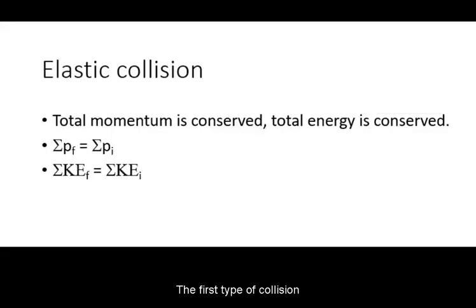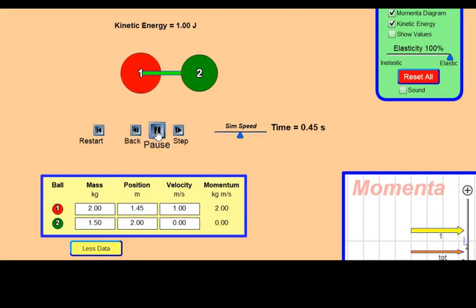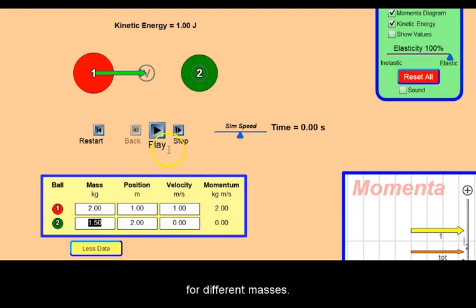The first type of collision is known as elastic collision. Total momentum is conserved and total kinetic energy is conserved. You can confirm this with the simulator by setting elasticity to 100%. Visually, this is how it will look for different masses.